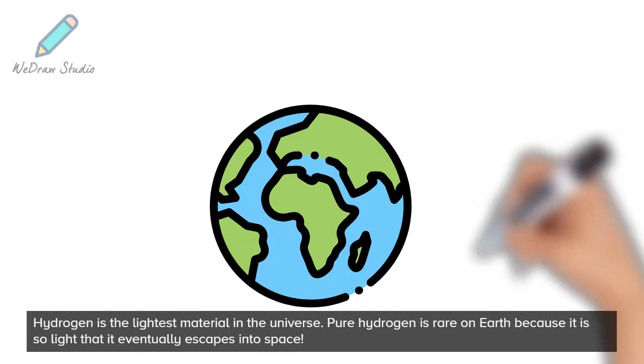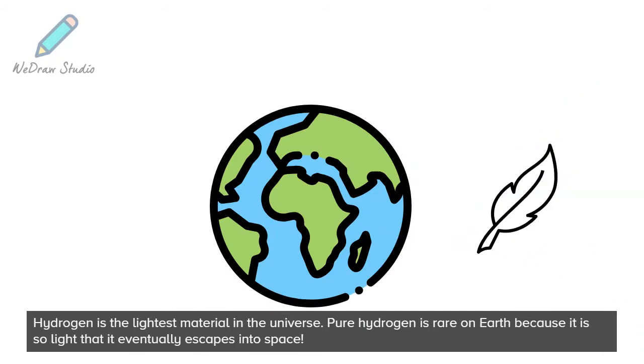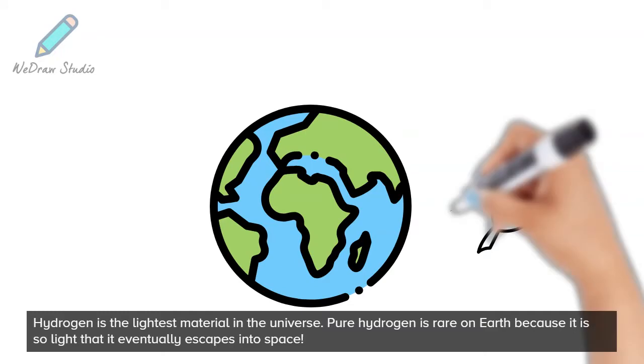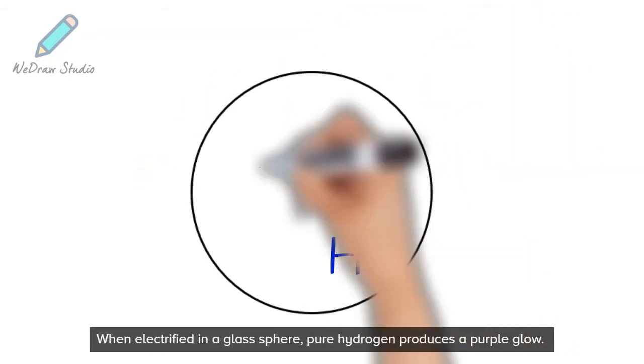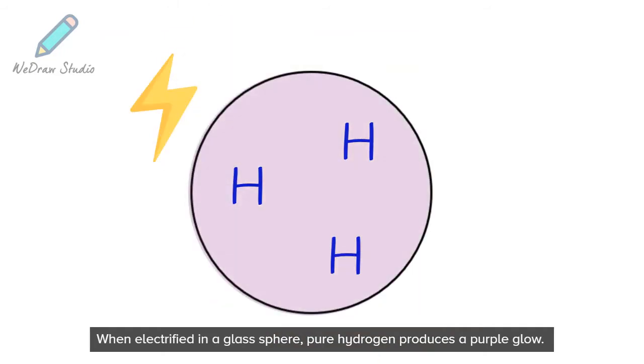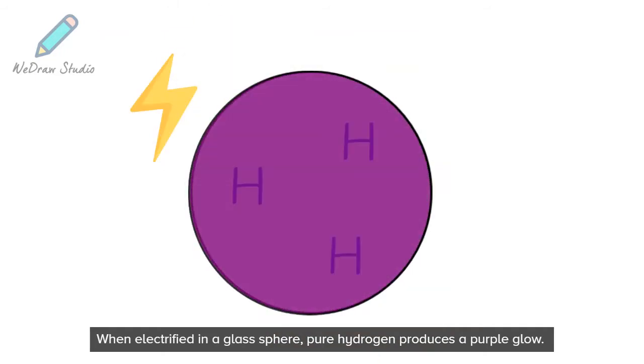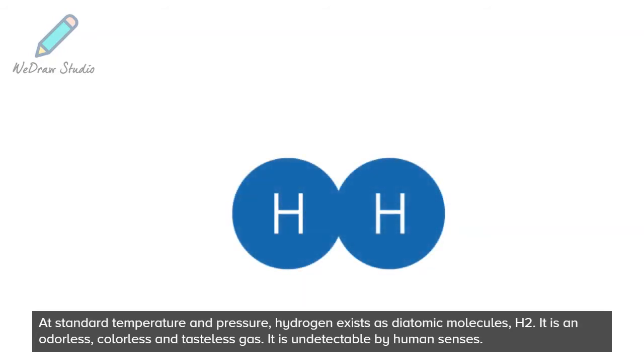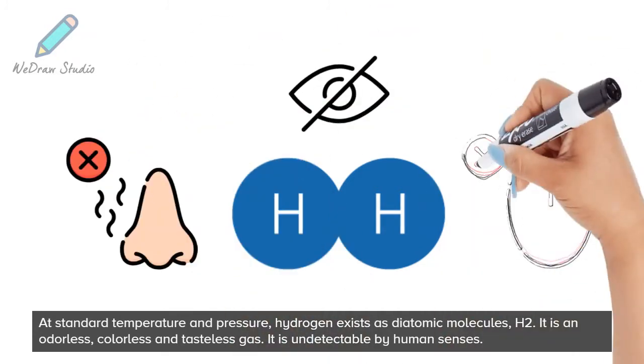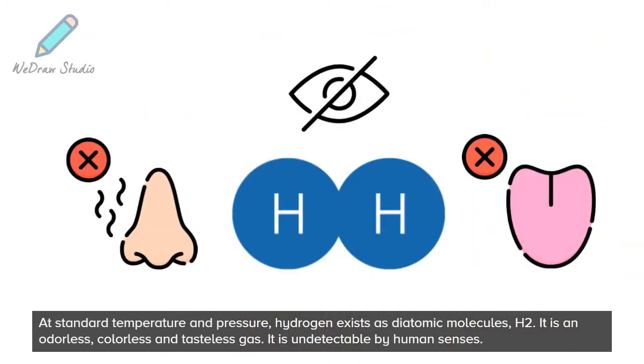Hydrogen is the lightest material in the universe. Pure hydrogen is rare on earth because it is so light that it eventually escapes into space. When electrified in a glass sphere, pure hydrogen produces a purple glow. At standard temperature and pressure, hydrogen exists as diatomic molecules, H2. It is an odorless, colorless and tasteless gas. It is undetectable by human senses.